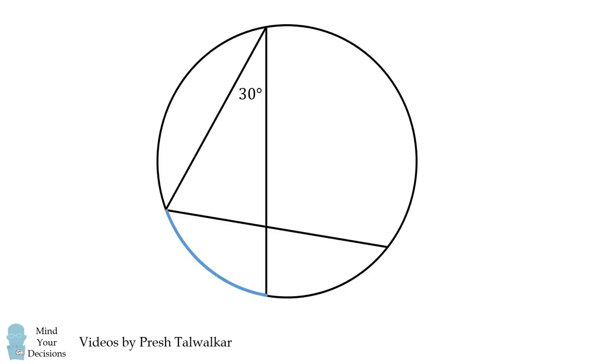If we have another inscribed angle for the same arc, it'll have the same measure by the inscribed angle theorem. So this inscribed angle will be 30 degrees.